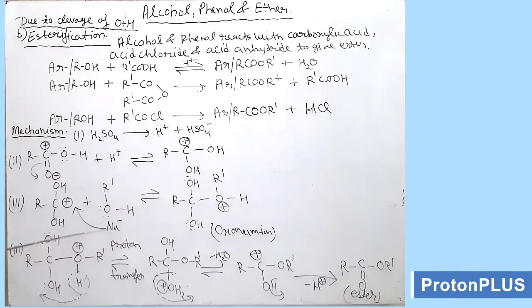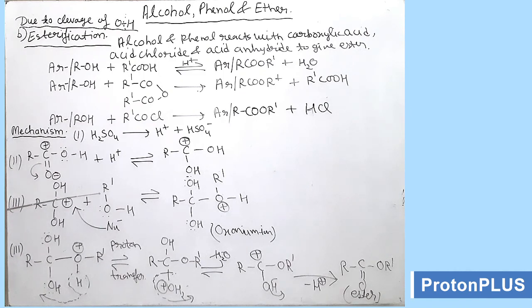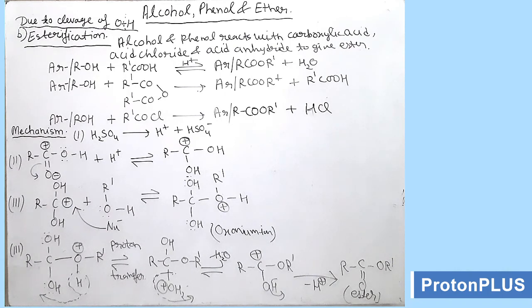This proton released in the last step can be reused in the second step, that is protonation of carboxylic acid to form the carbonium ion. This carbonium ion is further attacked by alcohol, and then the oxonium ion is formed. The oxonium ion transfers this proton — cleavage of OH bond in alcohol — to the OH group to form OH2+, and in this way OH is released as a water molecule H2O. So carboxylic acid releases OH and alcohol releases H+, and the product formed is ester.